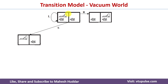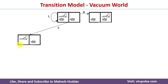When we apply the Suck action, the dirtiness of location A will be sucked by the AI agent and location A will become clean. So for the given initial state we have applied all three possible actions: Left keeps the same state, Right produces a new state, and Suck produces another new state.